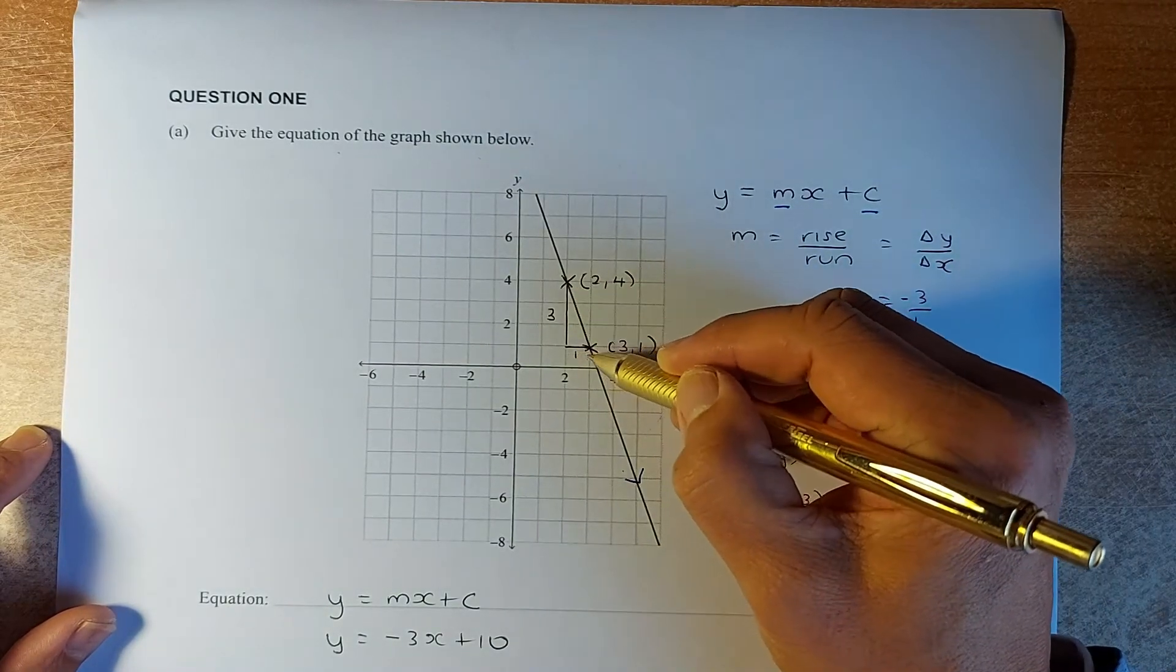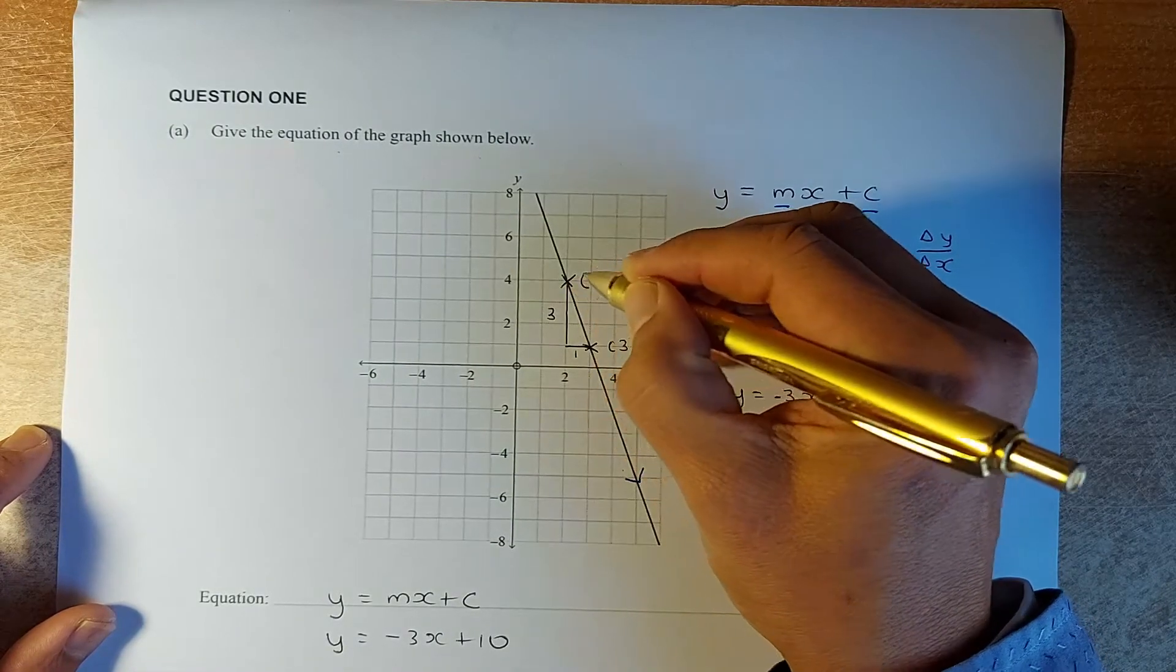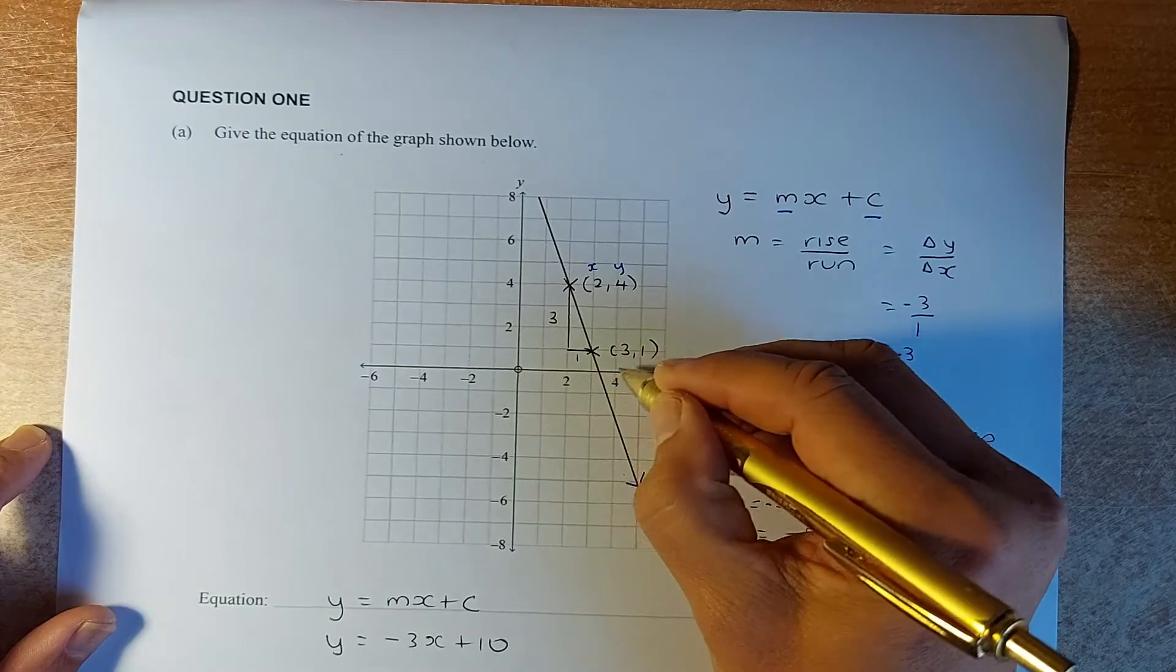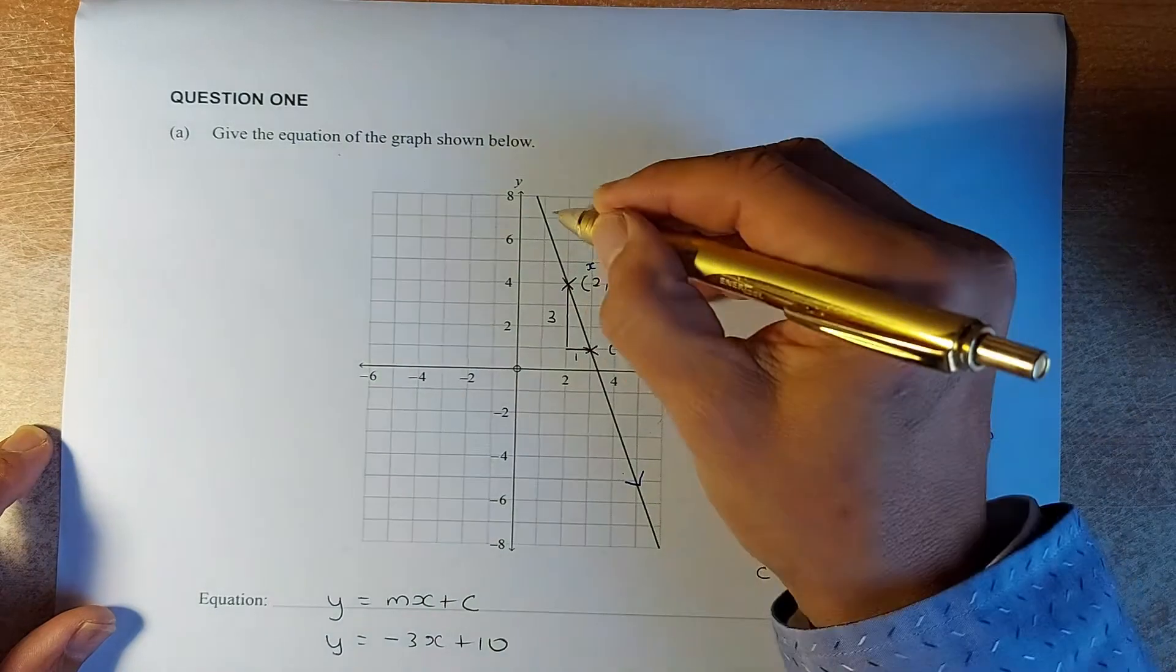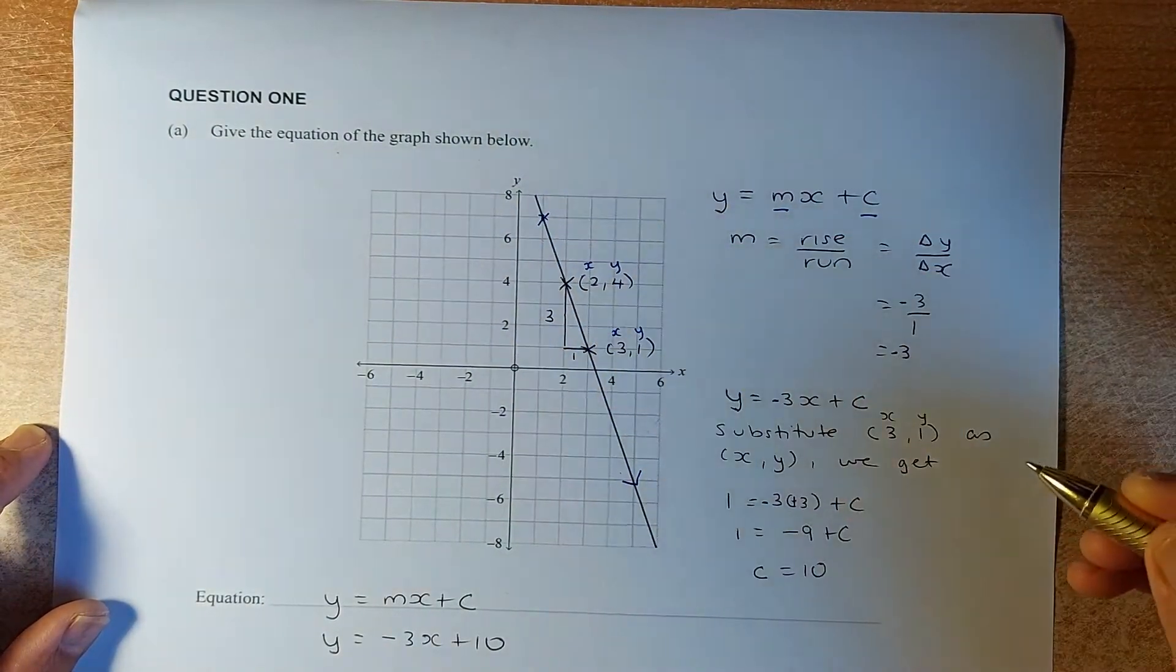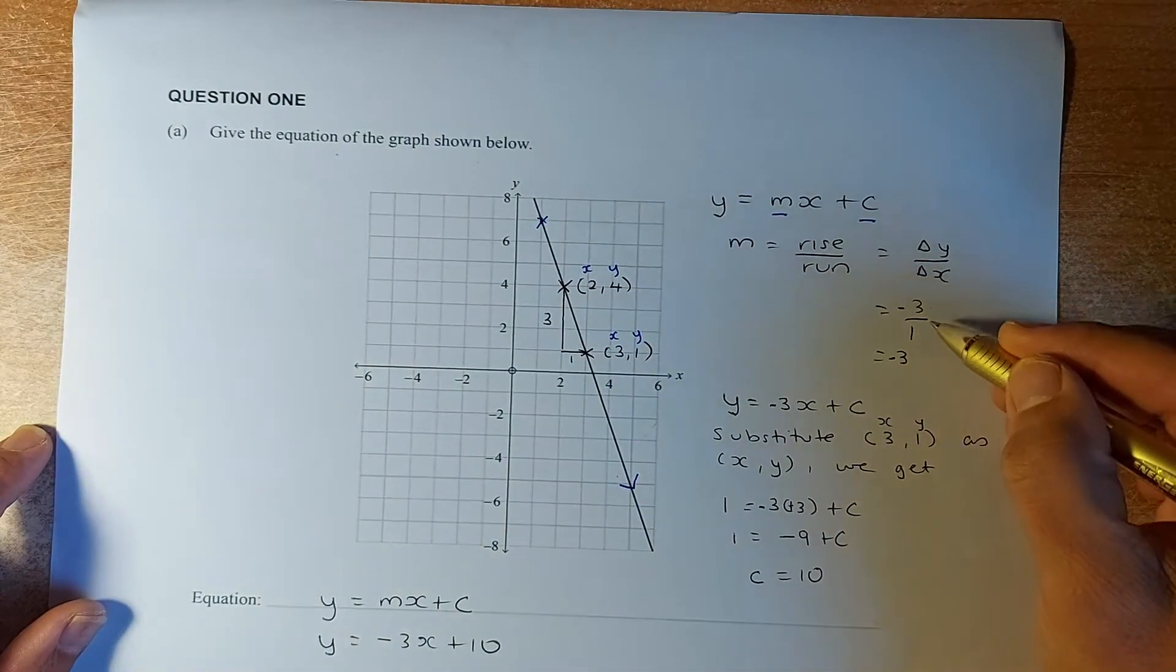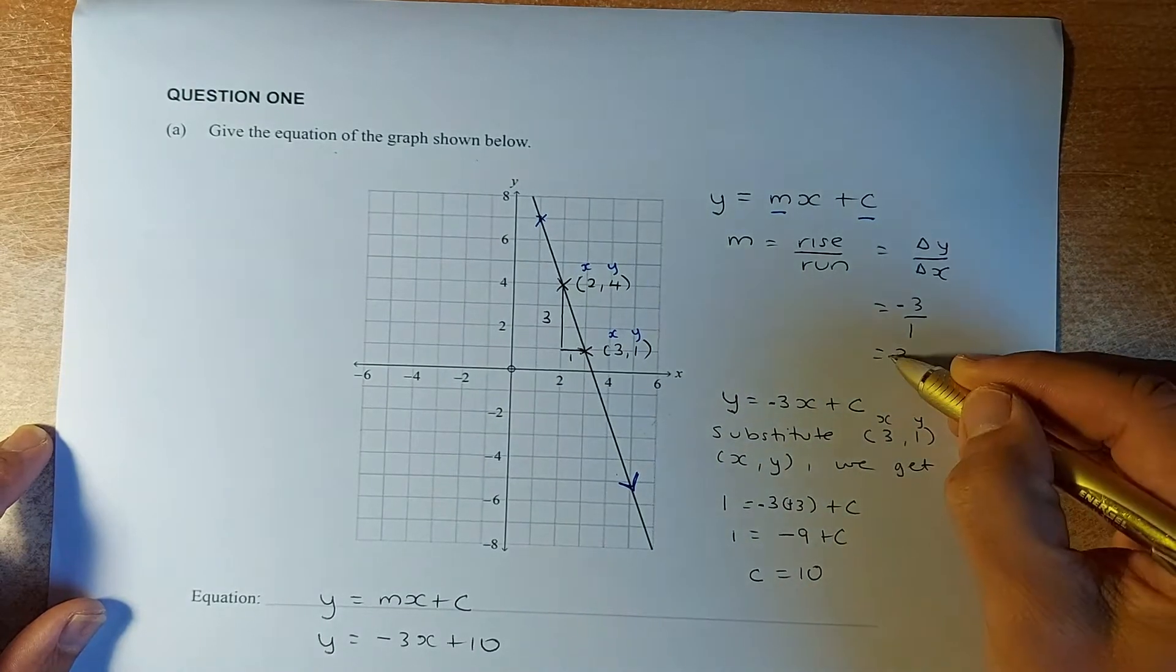So we are going to draw a triangle. It could be any triangle. Make sure the points are a whole number. So in this case, we have chosen this point 2, 4. x is 2, y is 4. And the second point is here. That is 3, 1. So x is 3, y is 1. You can even choose this point if you want. It could be 1, 6. So we have decided to choose these two points. And to find the gradient, we find the rise, which is 1, 2, 3. And the run is 1. So rise over run is 3 over 1. Because the slope is sloping downwards, we put a negative sign.